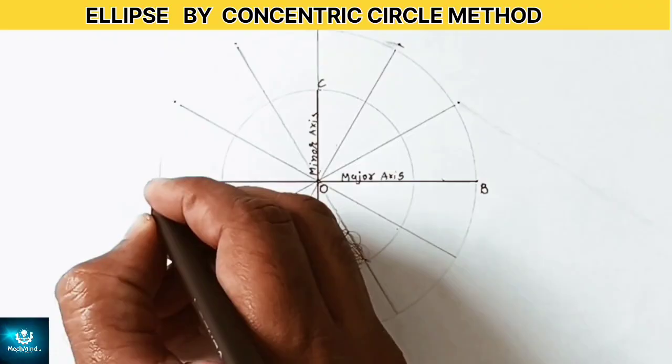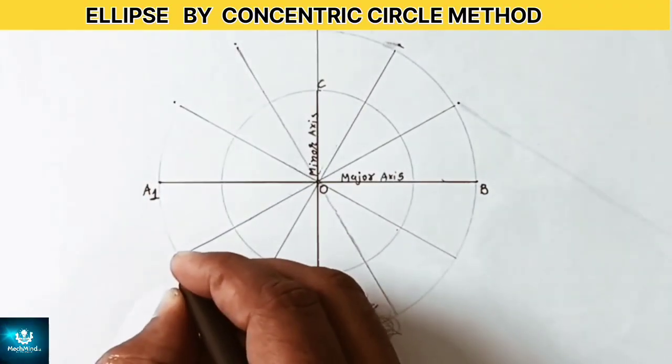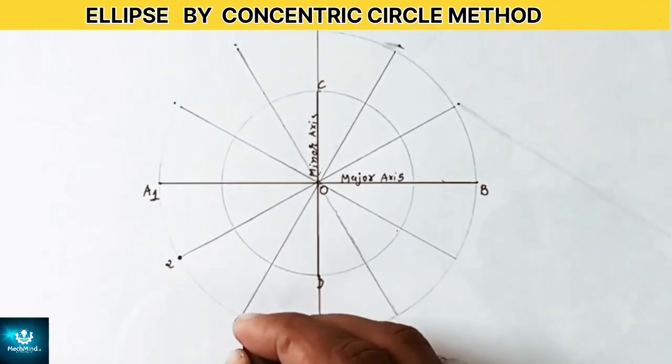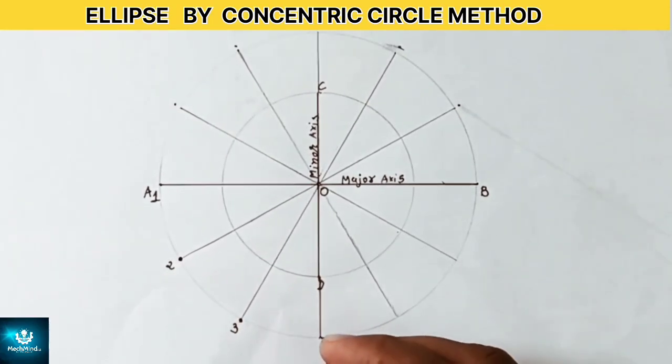Now mark each division point on the outer circle as 1, 2, 3, 4 and so on.